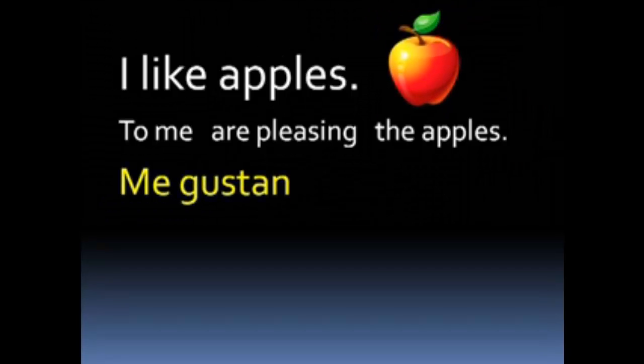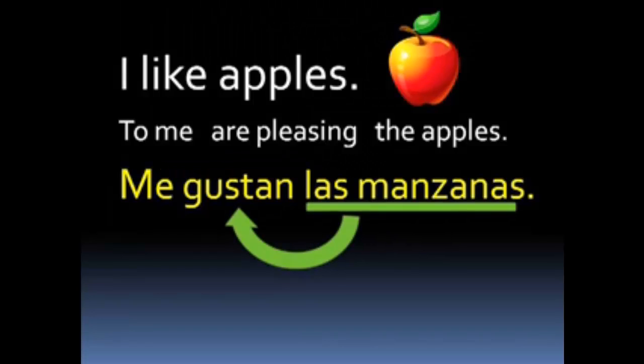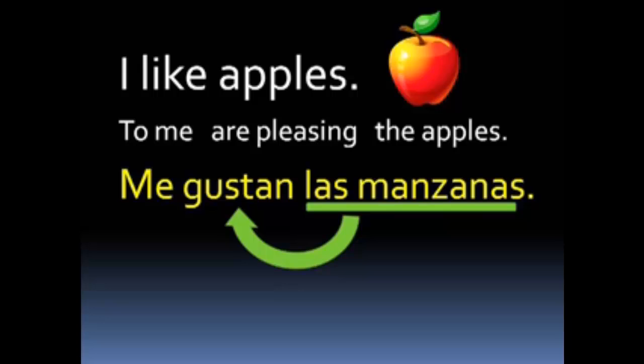Let's look at a few examples. In English you would say 'I like apples,' but the structure in Spanish is 'to me are pleasing the apples' — me gustan las manzanas. This is where most students trip up: they see gustar and want to say 'gusto' because it's 'I like.' No. Remember, gustar means 'to be pleasing.' So what is doing the pleasing? The apples are pleasing, so gustar gets conjugated as gustan. 'Las manzanas gustan' — the apples please — to whom? To me. Me gustan las manzanas.